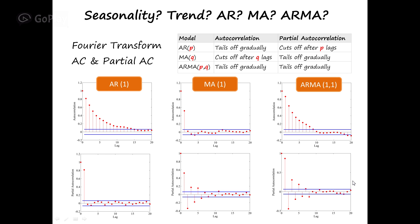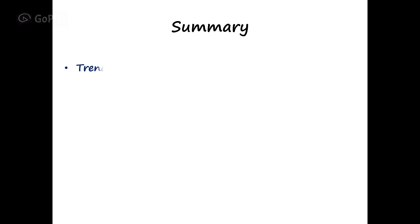Okay, so you can use autocorrelation and partial autocorrelation to judge if the model is AR or MA or combination of both. So in summary, in order to remove trend, you need to multiply your signal with this filter. If you want to remove seasonality, you need to multiply your signal with this filter. If you want to judge if the model is AR or MA or ARMA, you need to look at autocorrelation and partial autocorrelation.